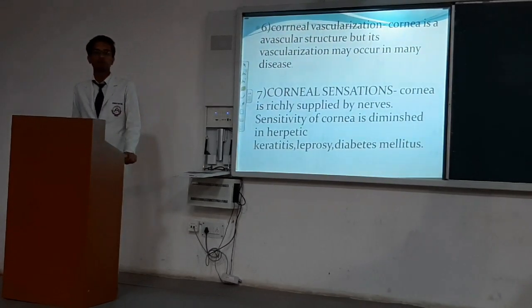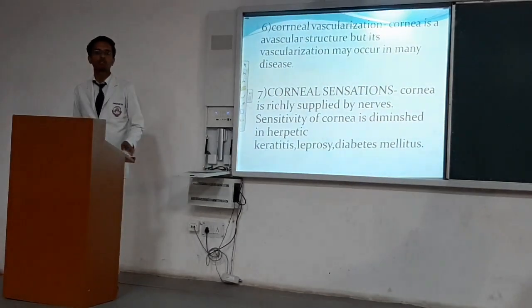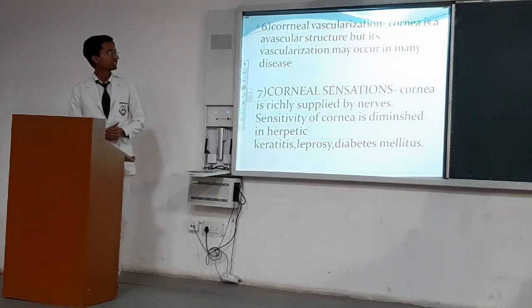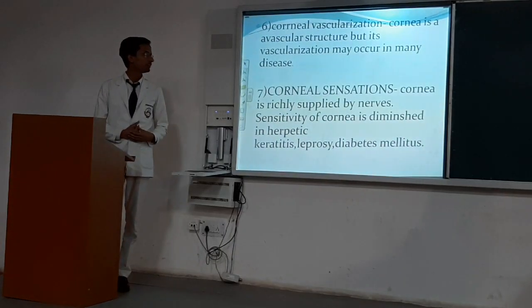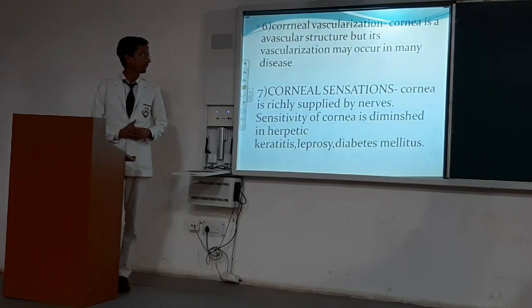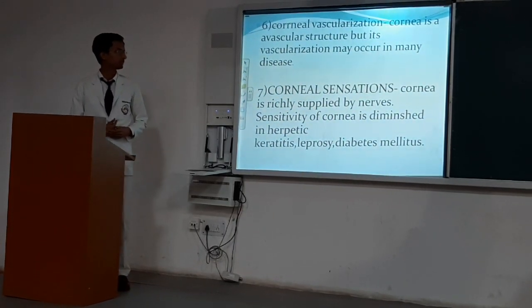Corneal vascularization — normally, the cornea is an avascular structure, but it may become vascularized in many diseases.